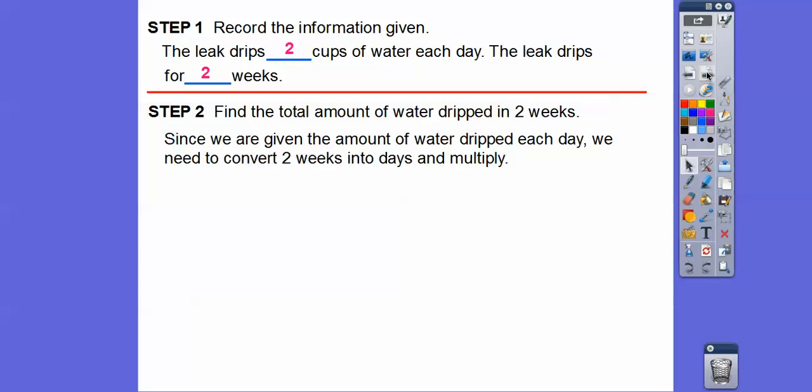Let's first find out how many cups were dripped in two weeks. Since we're given the amount of water dripped each day, we need to convert that two weeks into days and then multiply. There's two cups a day. How many days in two weeks? There's seven days in one week, so in two weeks there's going to be 14. So if we put 14 right there, two times 14 equals 28 cups total.